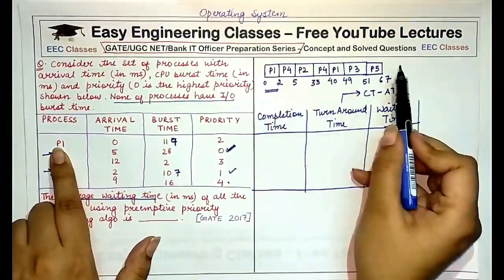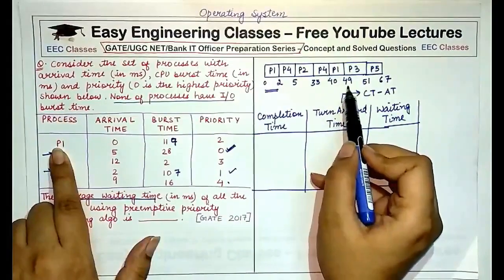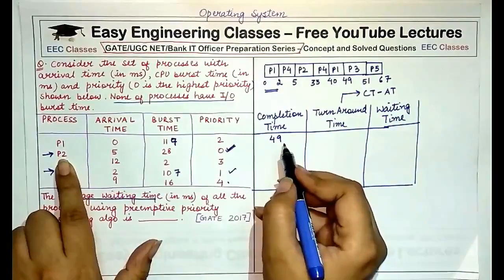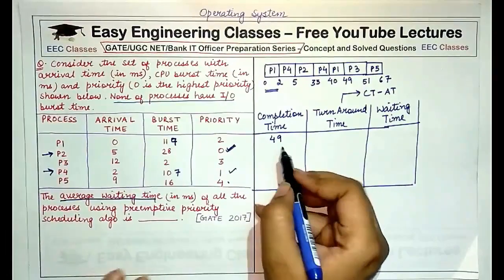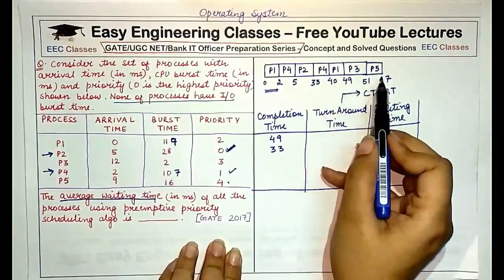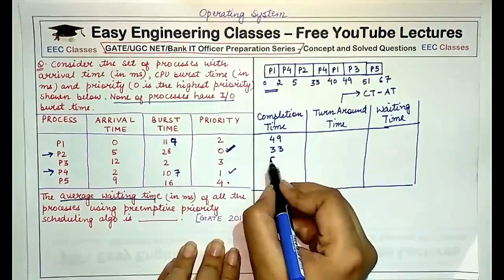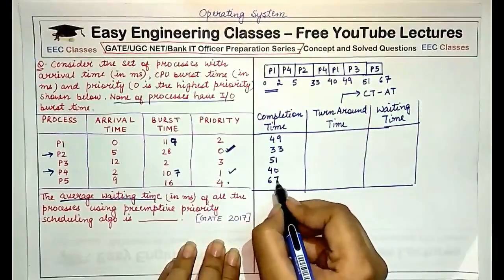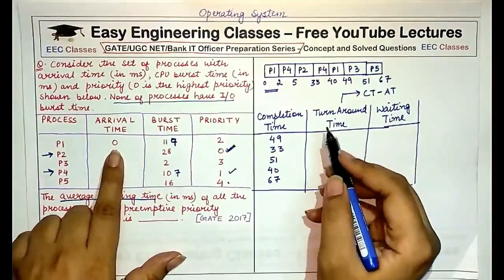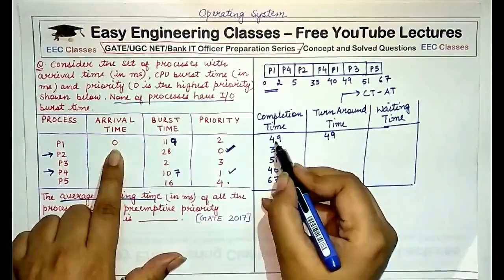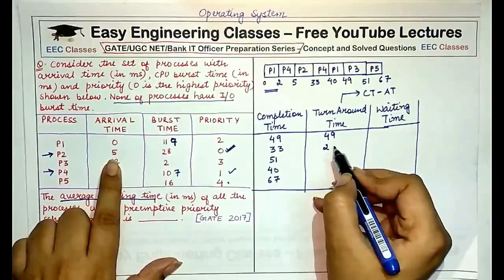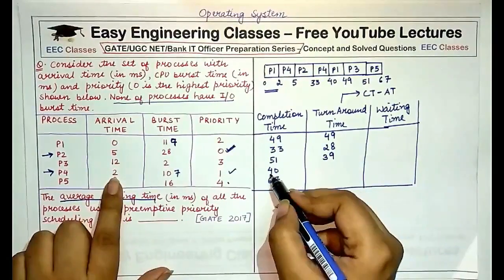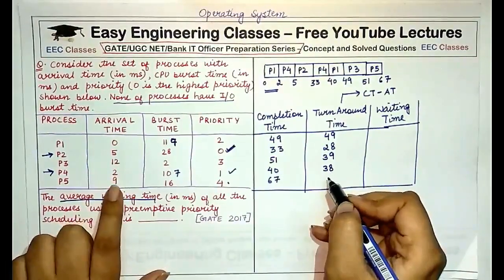The completion time of P1 is 49, P2 is 33, P3 is 51, P4 is 40, and P5 is 67. The turnaround time is completion time minus arrival time: P1 = 49 − 0 = 49, P2 = 33 − 5 = 28, P3 = 51 − 12 = 39, P4 = 40 − 2 = 38, and P5 = 67 − 9 = 58.